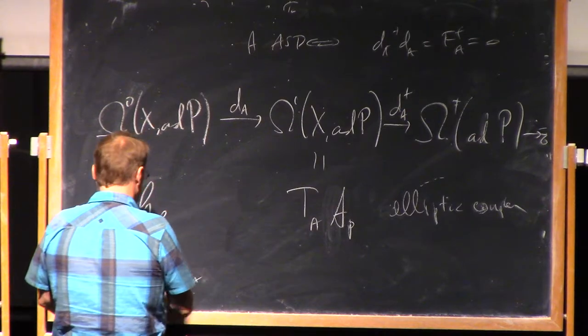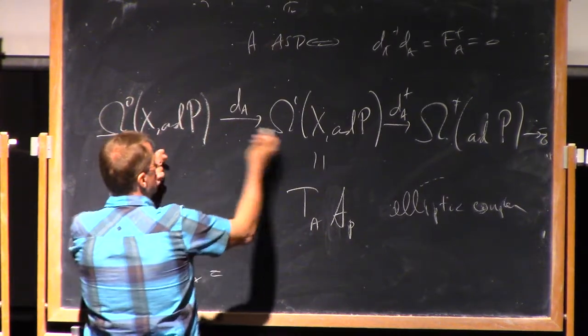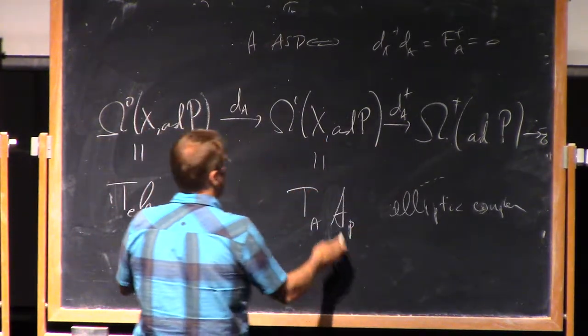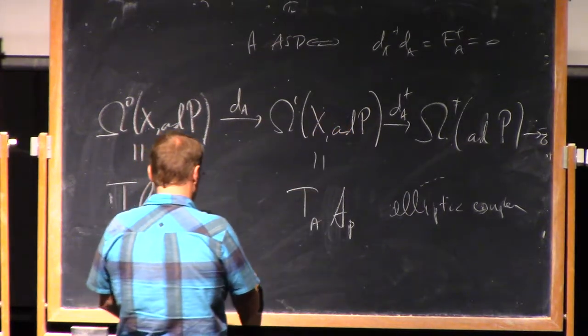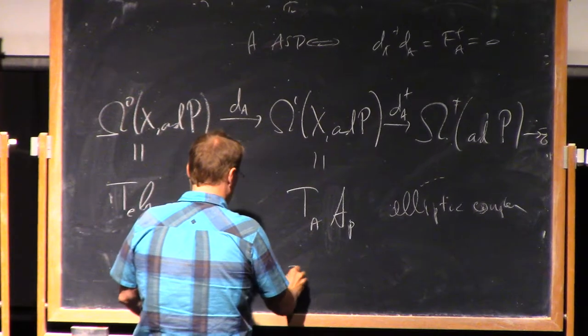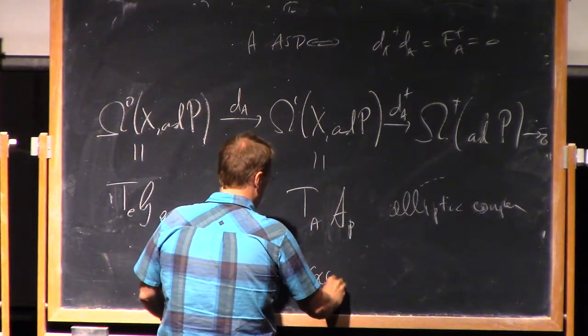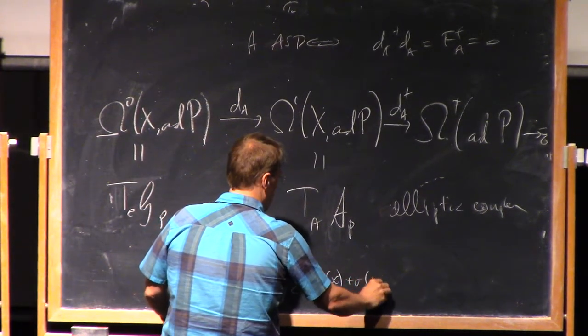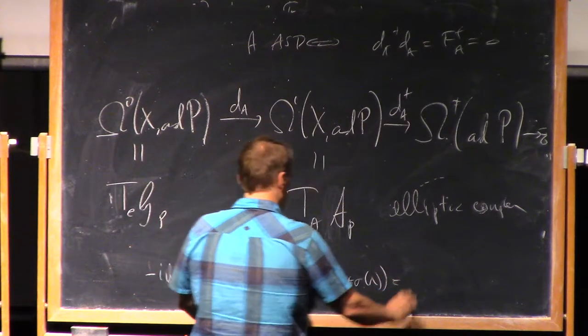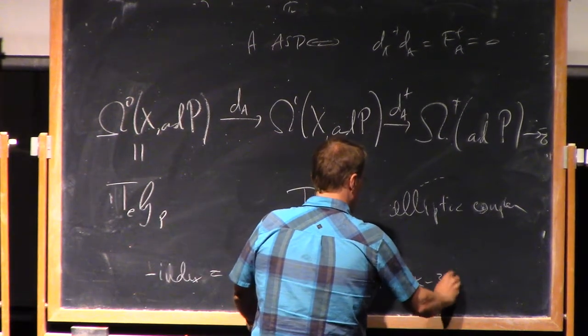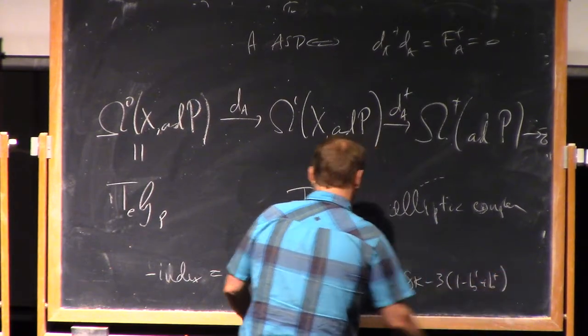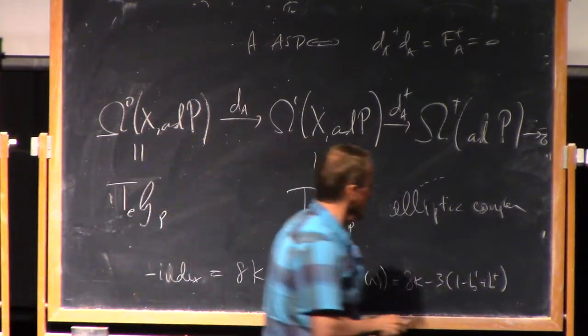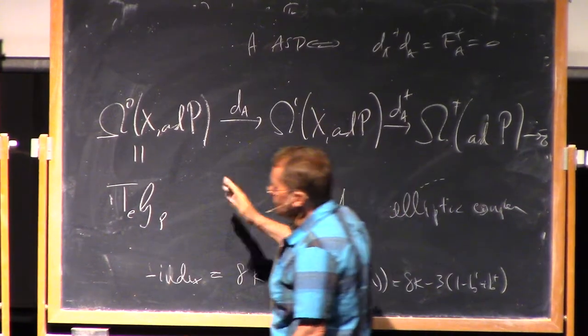And its index, well, I'm gonna write its negative index. Index is the alternating sum of the dimensions. We're really interested in the dimension of H^1, minus the index, and it's 8K minus 3 halves the Euler characteristic of X. So this is in the case of a closed manifold, or 8K minus 3 times 1 minus B_1 plus B_plus.